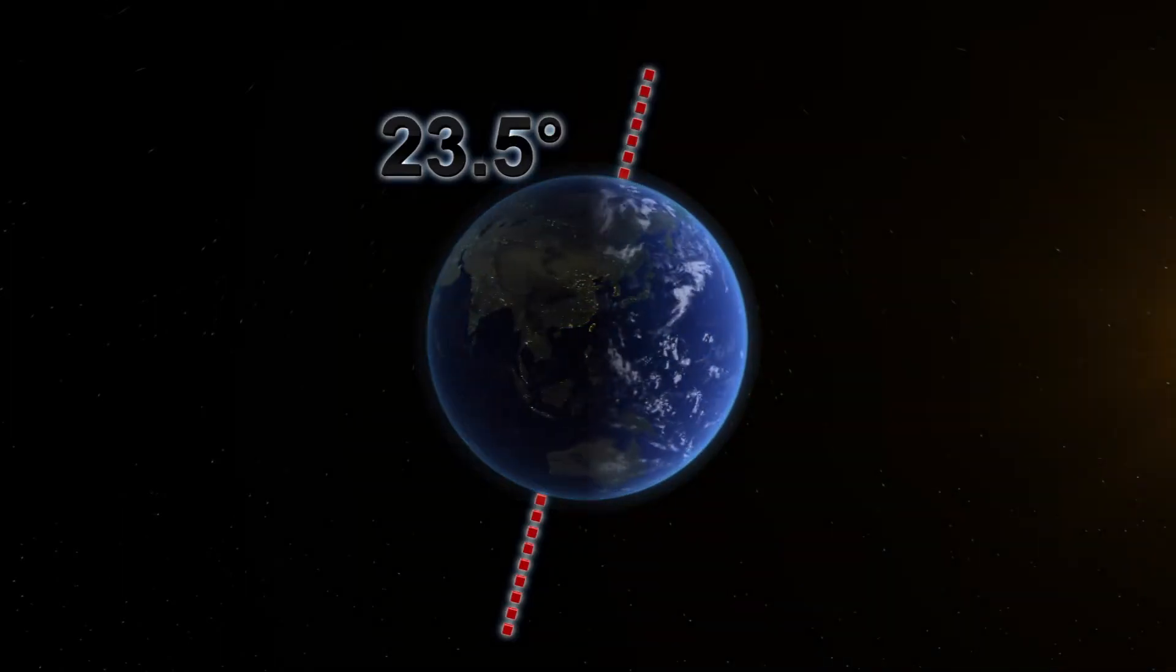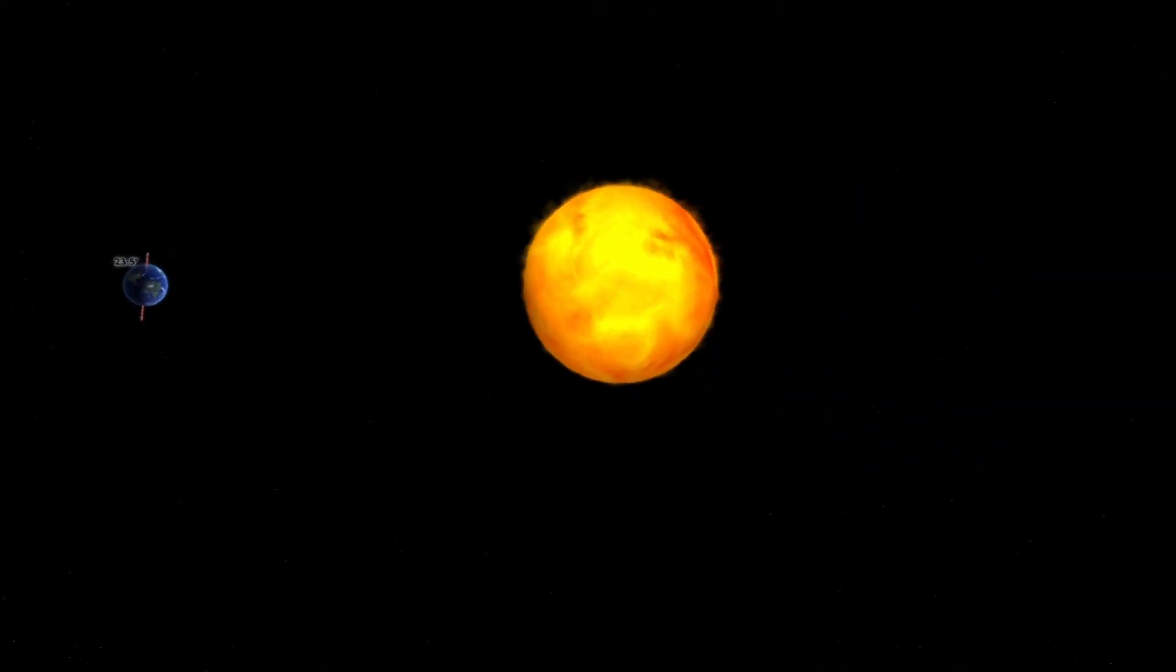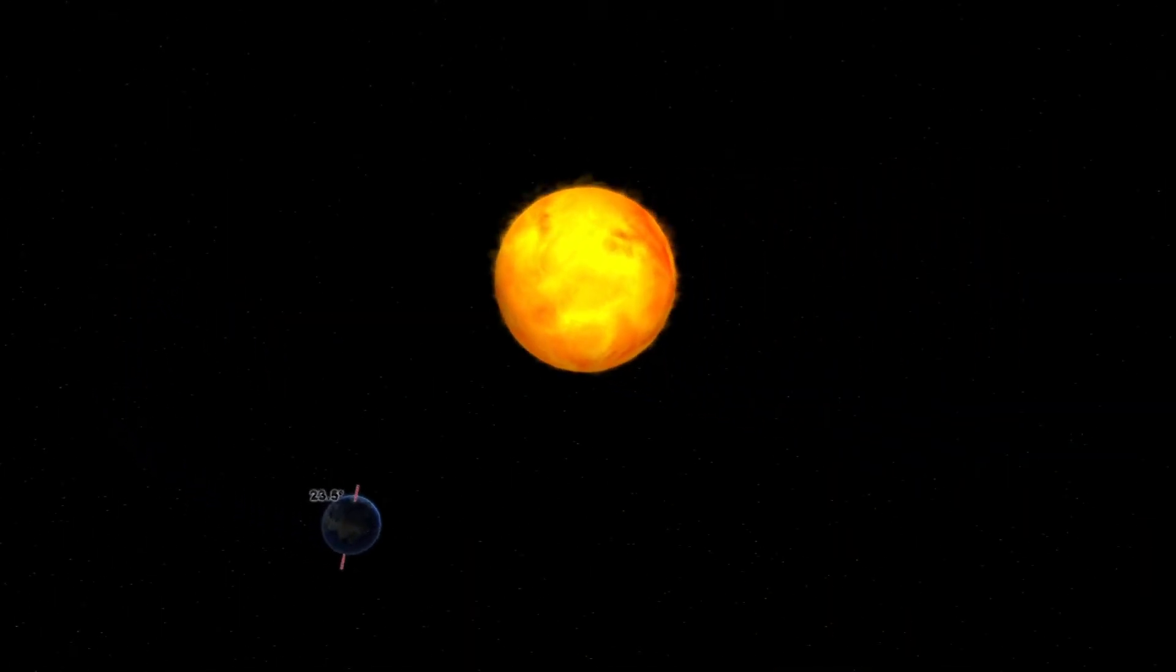The Earth rotates on a tilted axis while orbiting the Sun, which means different parts of the planet are pointed at or away from the Sun depending on the time of year.